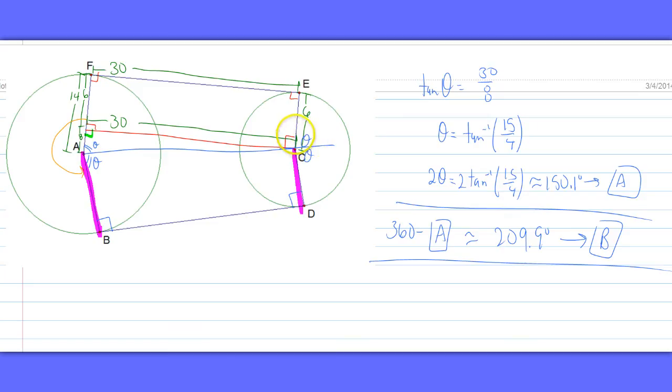So this angle in this smaller circle is two theta, which we've already saved as alpha A. Now let's go to actually calculating.